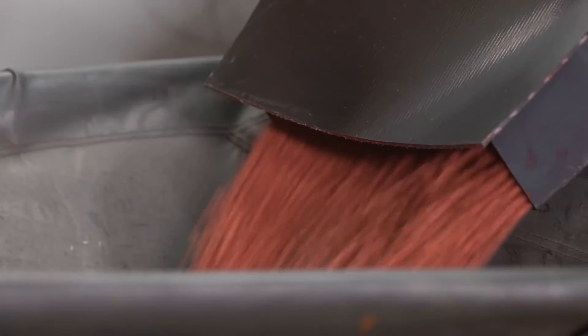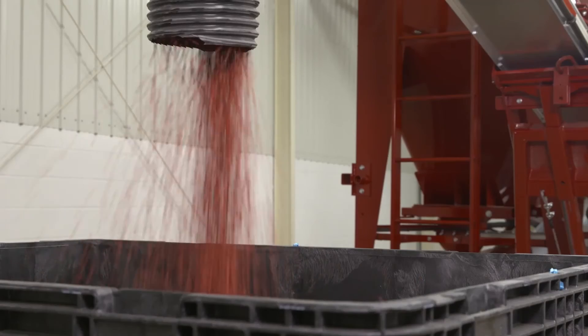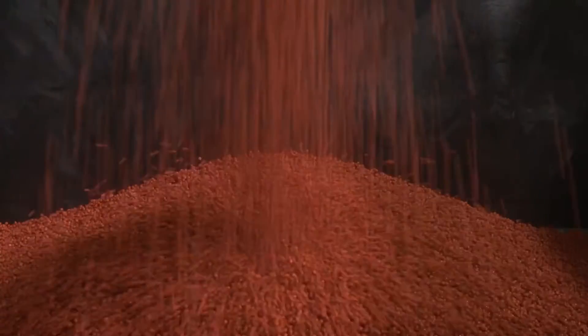The seed then drops into the secondary mixing drum where it is tumbled to finalize and perfect the coating process. Dry additives can also be applied in the secondary drum. Once the treated seed exits the drum, the process is complete and it's ready to be delivered to the farm.